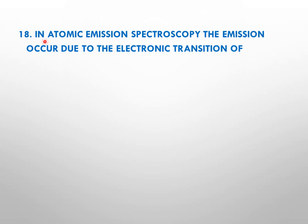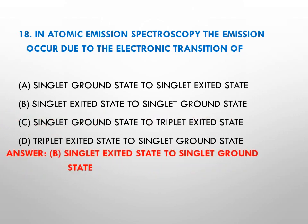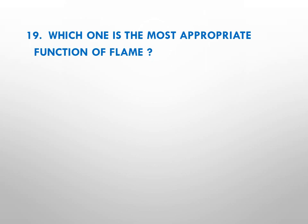Question number eighteen: in atomic emission spectroscopy, emission occurs due to the electronic transition from the singlet excited state to the singlet ground state.